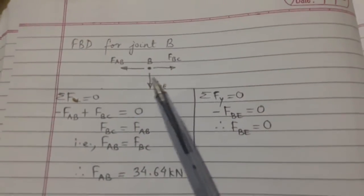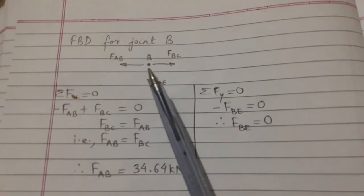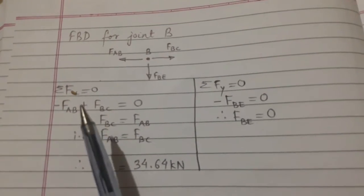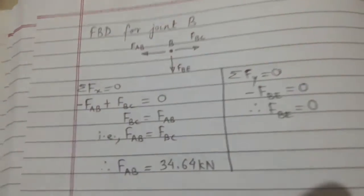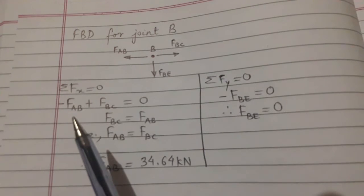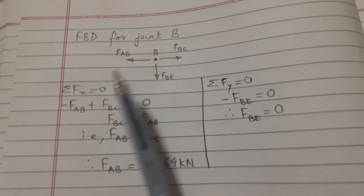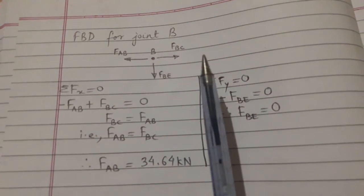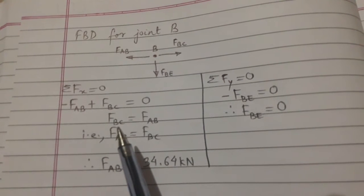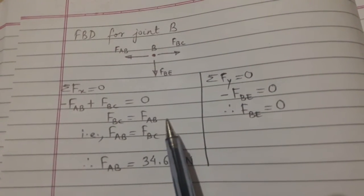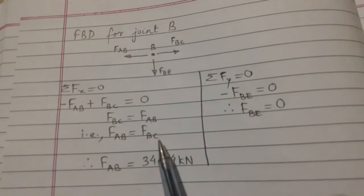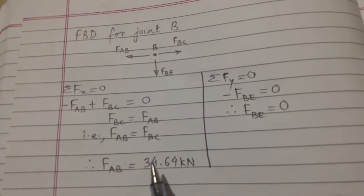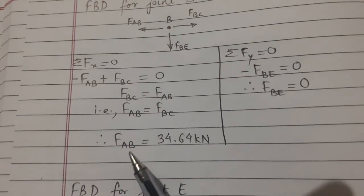Now let us take joint B. This is FAB and FBC and FBE. Summation of Fx equal to zero. We have FAB as negative because it is towards left hand side, and FBC is positive because it is towards right hand side, equal to zero. Therefore FBC equals FAB.